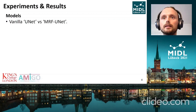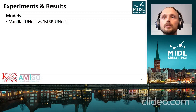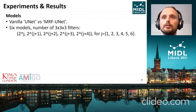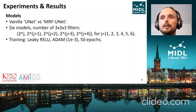Our experiment compares a baseline U-Net against a MRF U-Net, which simply is the U-Net with the added MRF component. Note that the MRF U-Net has an almost negligible increase in model parameters compared to the U-Net alone. For both cases, we fit six models with increasing number of conv filters. We use leaky-ReLU activations, the ADAM optimizer, and a fixed number of epochs.